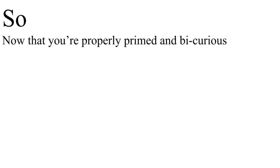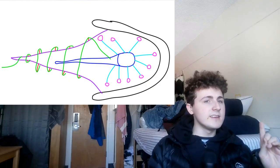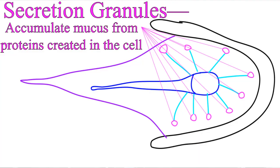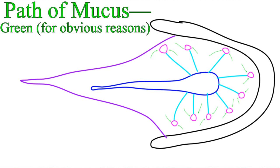So now that you're properly primed and curious, let's answer. How exactly does the coloblast help with that? Well, let's go step by step. We start in here, the secretion granules. These guys are little balls that hold the mucus after the proteins making them up have been assembled throughout the cell.